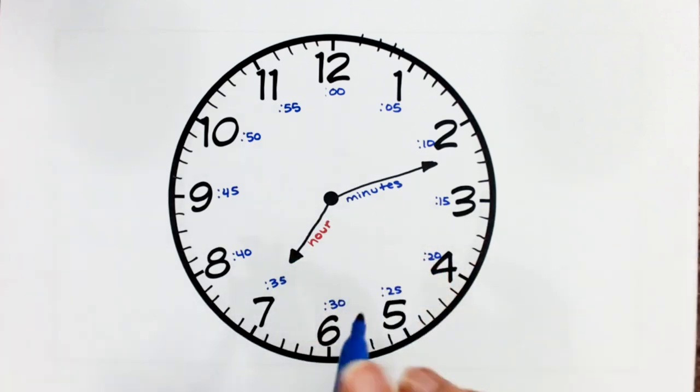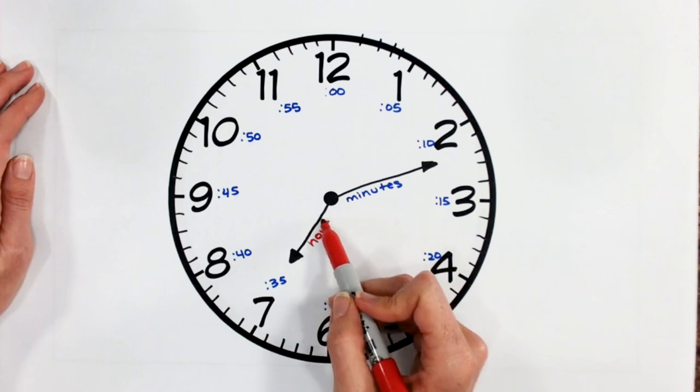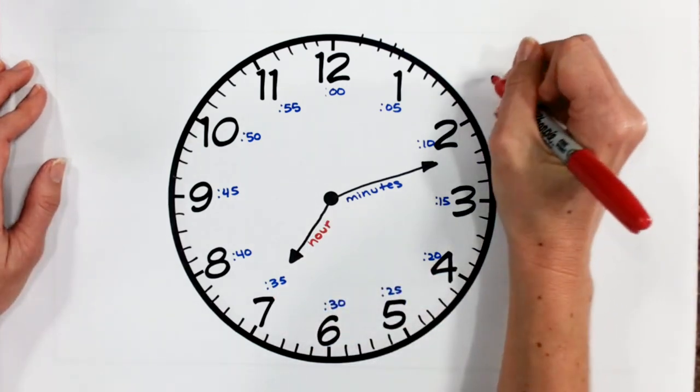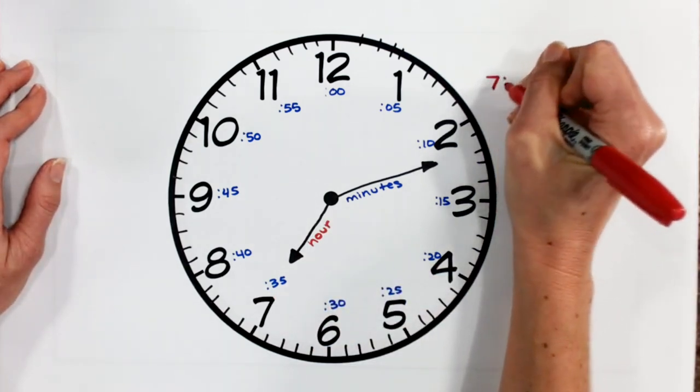All right, so let's start with our hour. I see that my short hand, my hour hand, is pointing to seven. So my hour is seven.